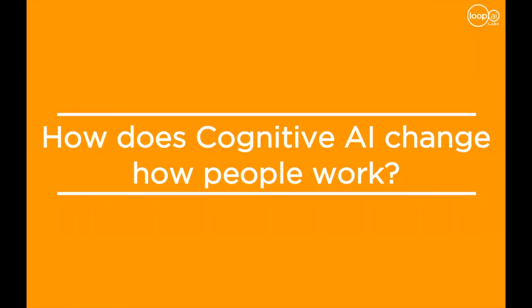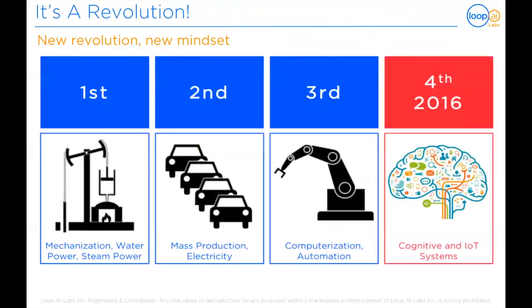We have entered into a new chapter of our technology history. Economist Andrew McAfee wrote: "One could argue that today digital technologies are doing for human brain power what steam engines and related technologies did for human muscle power during the industrial revolution. They're allowing us to overcome many limitations rapidly and to open up new frontiers of unprecedented speed." He closes with, "It's a very big deal. The revolution has already begun. The time to act is now."